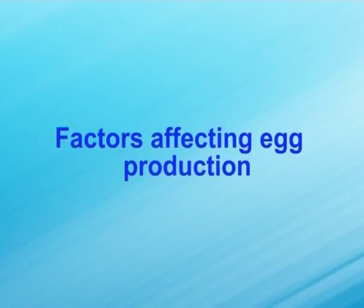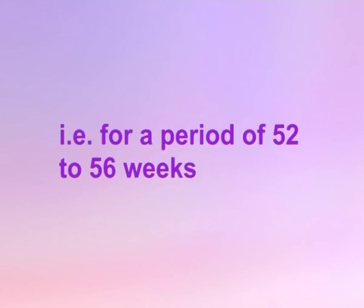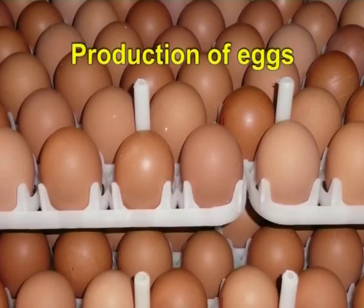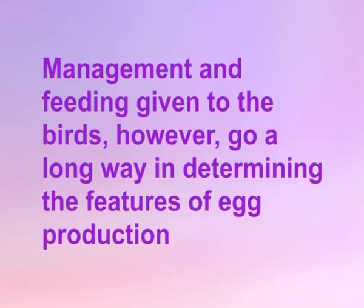Factors affecting egg production: typically, the production cycle of a layer lasts just over a year, that is for a period of 52 to 56 weeks. During this period, several factors are known to influence the production of eggs. It is hence important that the cycle must be managed effectively and efficiently in order to obtain the maximum output and profit. The following are the factors which majorly influence egg production. First is the breed — the breed of the laying bird influences egg production. Management and feeding given to the birds, however, go a long way in determining the features of egg production.